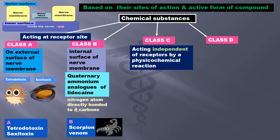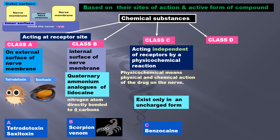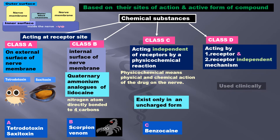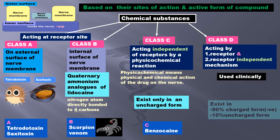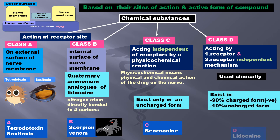Class C compounds produce their effect independently of receptors, by a physicochemical reaction — meaning through physical and chemical action of the drug on the nerve. Class C exists only in an uncharged form; example is benzocaine. Class D acts by a combination of receptor and receptor-independent mechanisms. These are used clinically and exist in 90% charged form and 10% uncharged form. Examples are lidocaine and prilocaine.